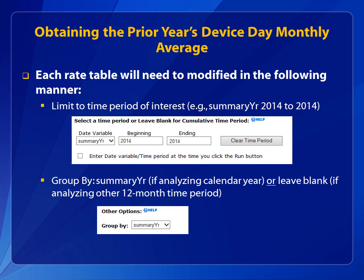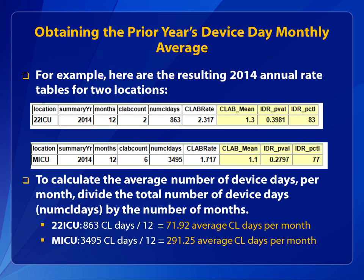If you would like to assess a different 12-month time period, such as June 2014 through May 2015, then the group by option must be left blank. Here's an example of annual rates for two locations produced by modifying the rate table for CLAB data for ICU other. The average number of monthly central line days can be calculated by dividing the total number of central line days per location by the number of months reported, 12.